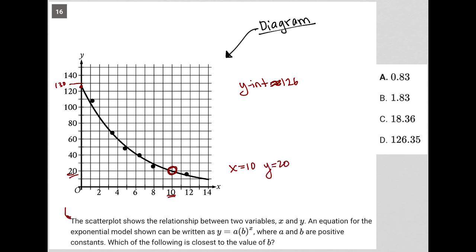The scatter plot shows the relationship between two variables, x and y. An equation for the exponential model shown can be written as y equals ab to the x. I'm going to just rewrite that: y equals a times b to the x power, where a and b are positive constants.